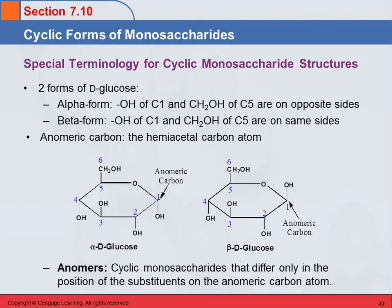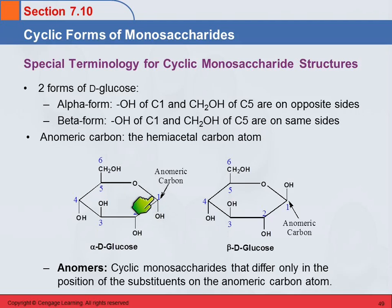An anomer — you would have a pair of anomers. They're cyclic monosaccharides that differ only in the position of a substituent on that anomeric carbon, and that difference arises because the ring opens and closes and you have rotation around this single bond. This anomeric carbon is a hemiacetal carbon atom — remember hemiacetals? A hemiacetal has a hydroxyl group and an ether group. That's probably the main reason we even told you about hemiacetals in organic chemistry, because they come in here.